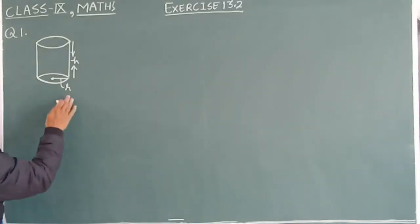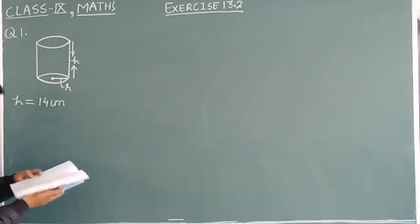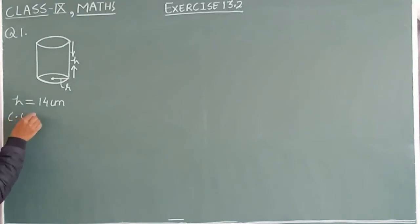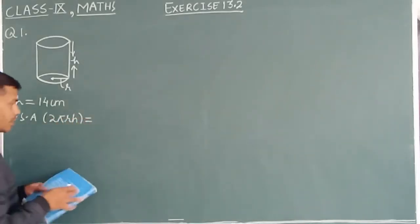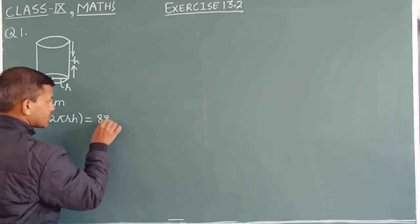For all this, we are given that height is 14 centimeter and its curved surface area CSA, it means 2 pi r h. This we are given 88 square centimeter.